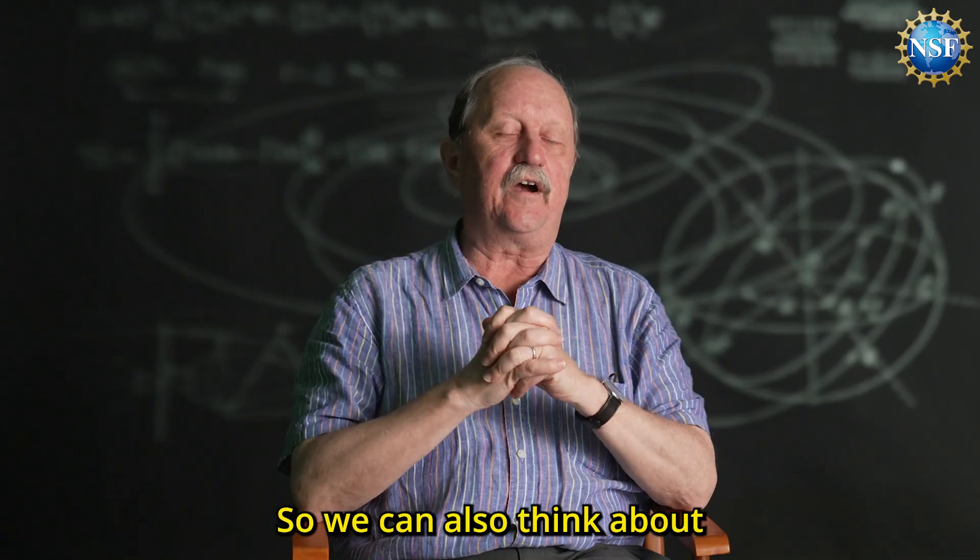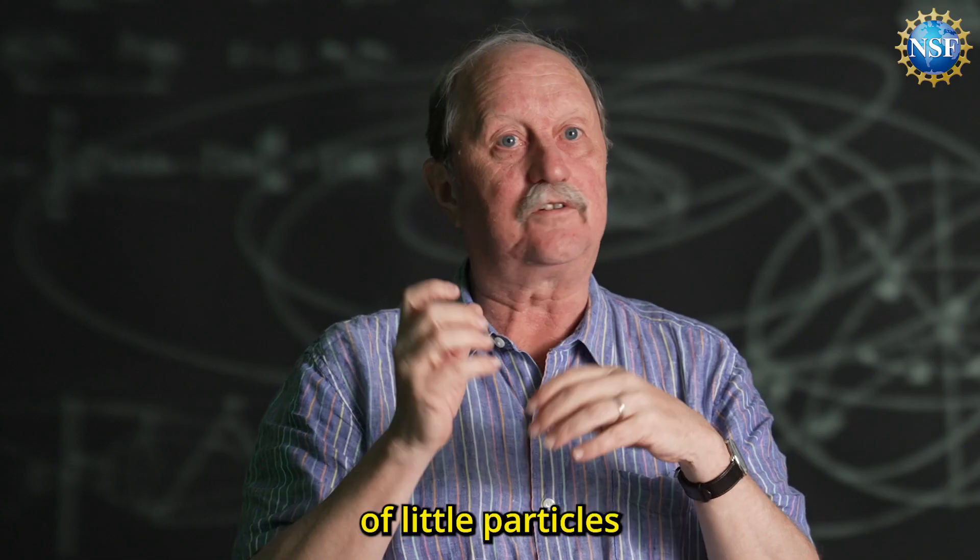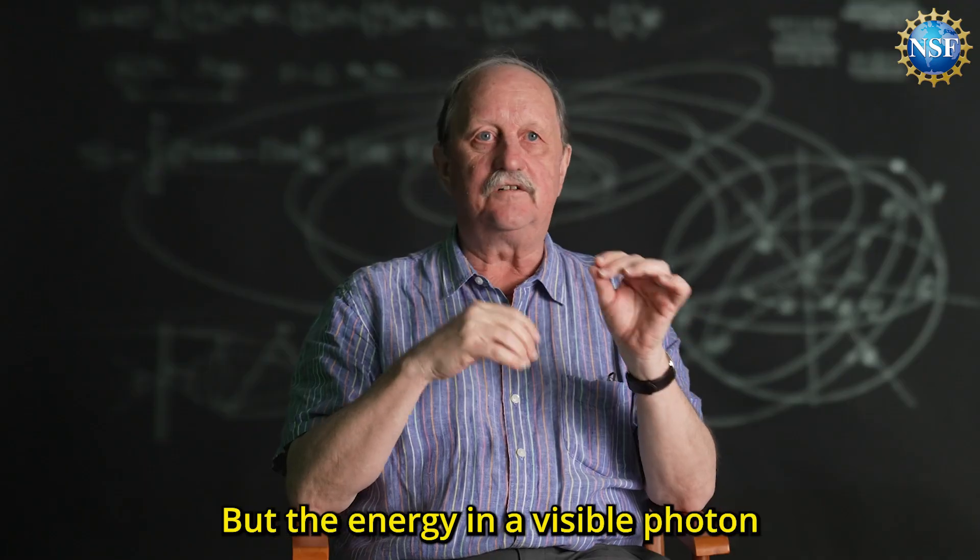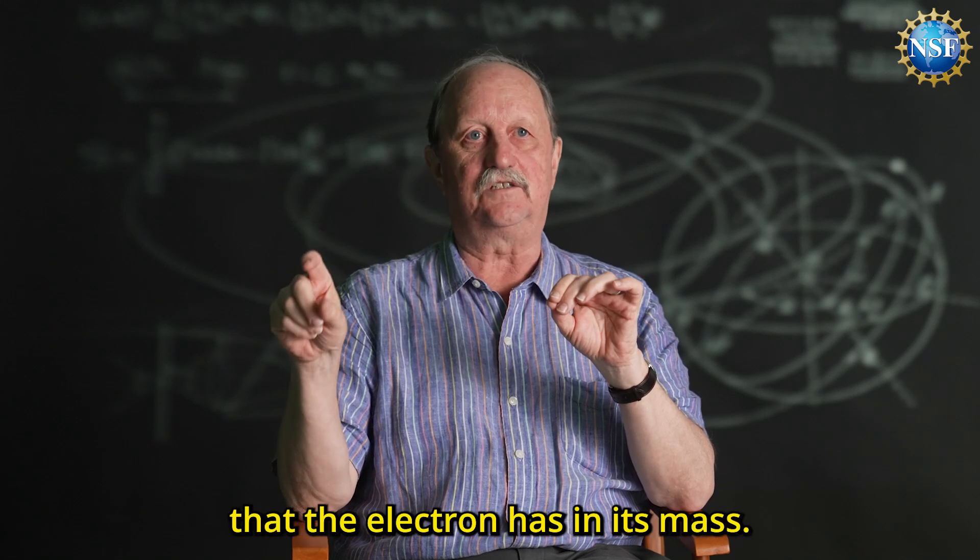We can also think about visible light, like we see here. That visible light comes in the form of little particles that we call photons, but the energy in a visible photon is much less than the energy that electron has in its mass.